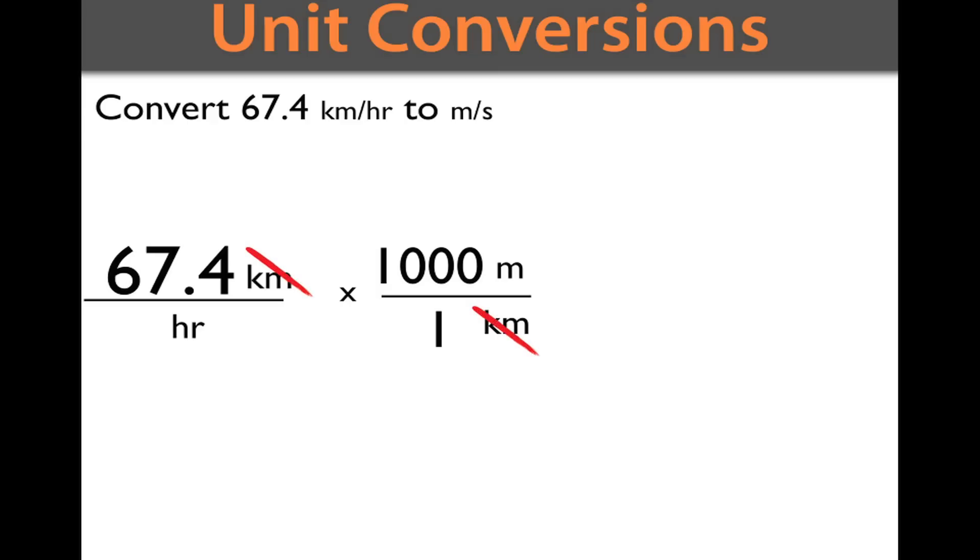If we're looking at our units, we now have meters over hours, which isn't quite right. We need to get rid of those hours. So, we put our hours on the top and our answer is supposed to be in seconds. So, we'll put seconds down there. Now, I happen to know that in one hour, there's 3,600 seconds.